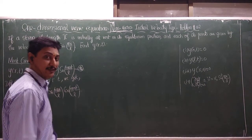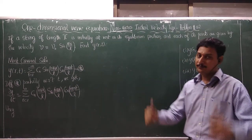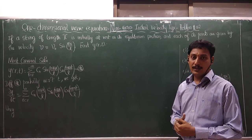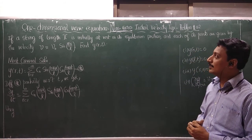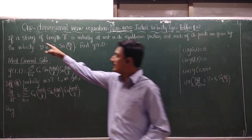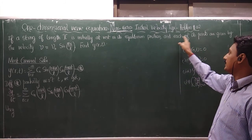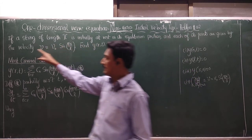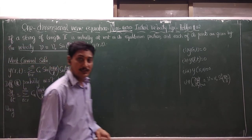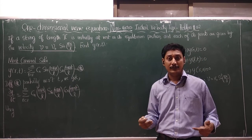Welcome back to our YouTube channel ADC Max. The second problem comes under the non-zero initial velocity type. If a string of length L is initially at rest in its equilibrium position and each of its points are given a velocity, find the displacement function. Once the velocity is given and the string is at equilibrium, the displacement becomes zero.